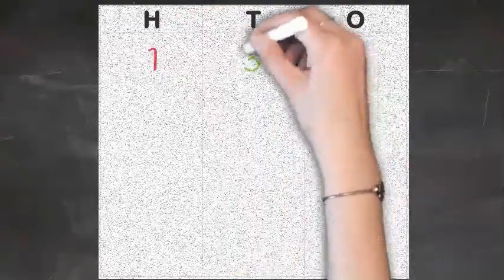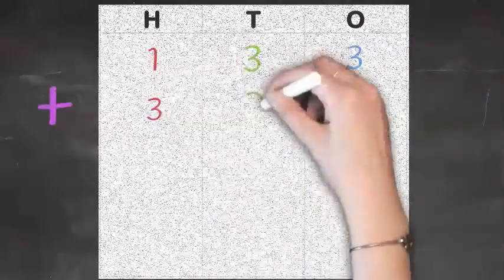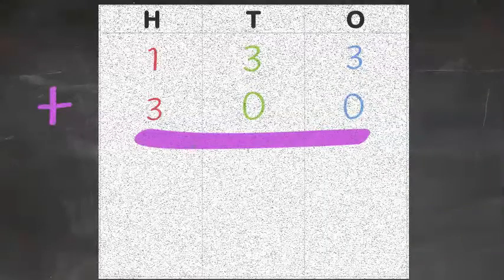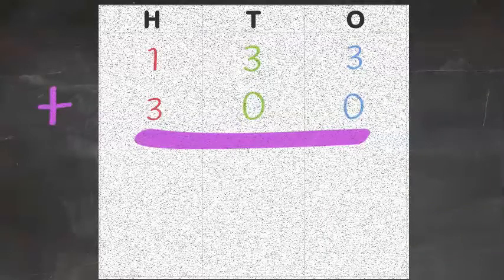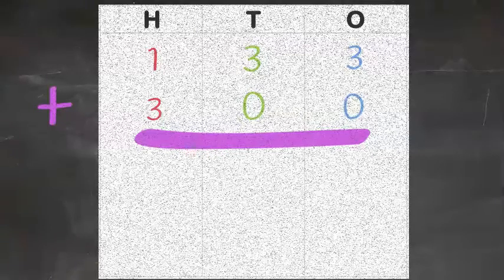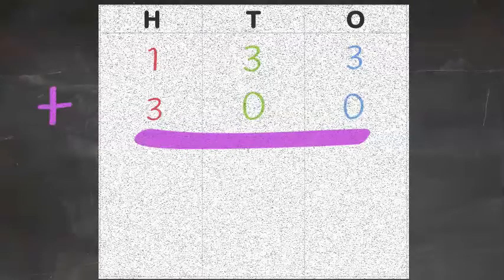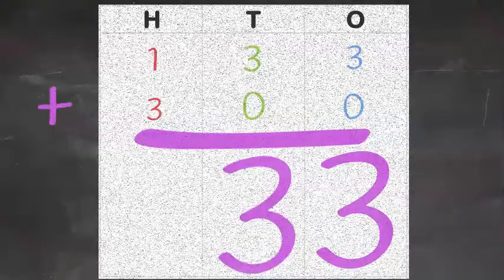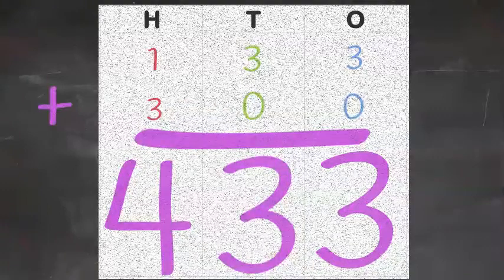Okay. Hopefully, you paused the video and gave yourself plenty of time to complete each of the problems we provided for you. Now, for the first question, it was 133 plus 300. Now, 300 is very important as there are no tens or ones in that number. So, you know that only the hundreds column is going to change. We are adding a further 300 to the number 133. So, that gives us 433.